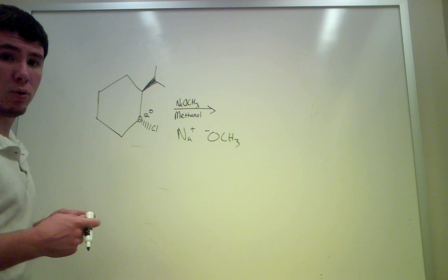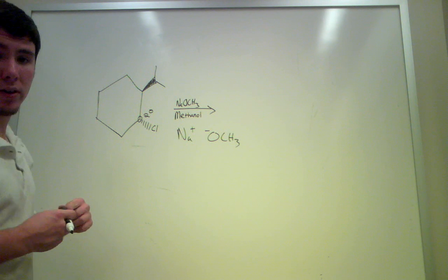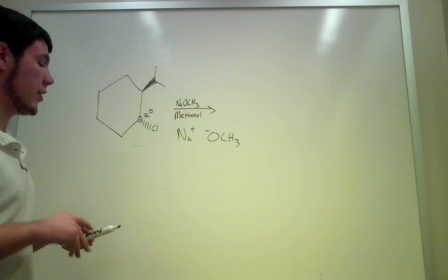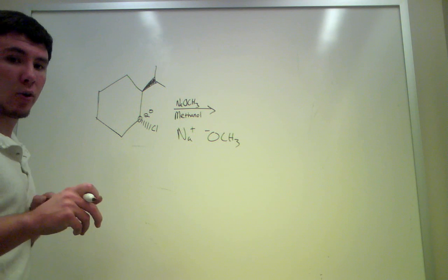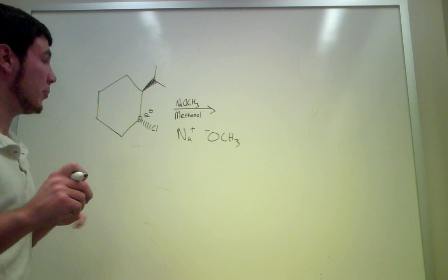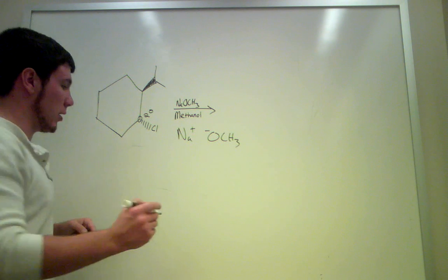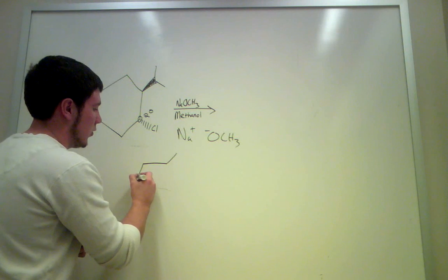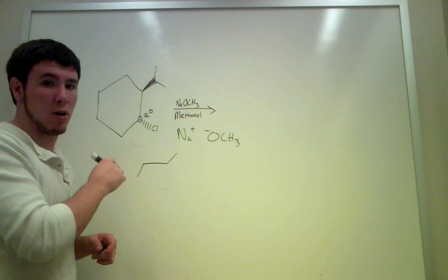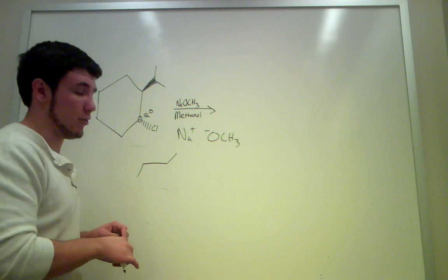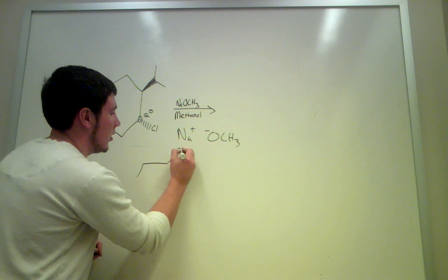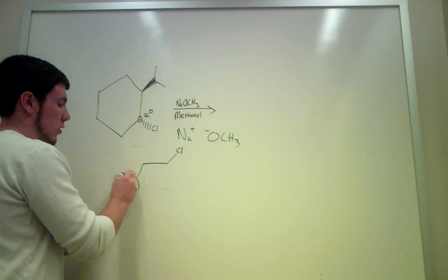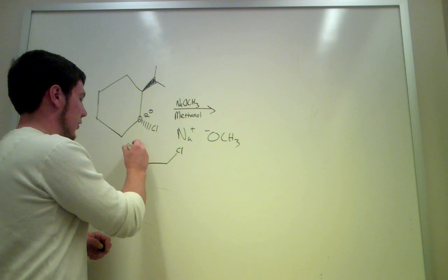We know for E2 that this acts as a base and it deprotonates the adjacent carbon. One thing that I haven't talked about yet is that not only does it deprotonate the adjacent carbon, but since we have stereochemistry indicated, it's the anti-coplanar proton that it deprotonates. So if this is our Cl here, the hydrogen that we're going to remove is going to be this one right here, not this one.